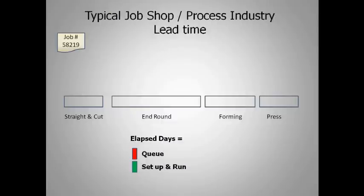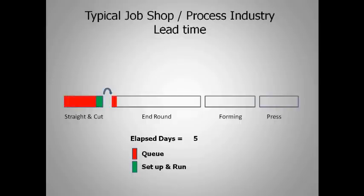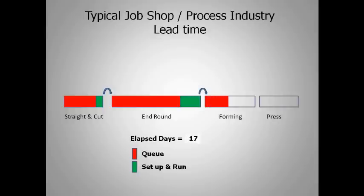In a job shop or process environment, we have a classic setup with work centers that do different things. In this example, we have straighten and cut, end rounding, forming, and press. A job gets entered into the system and starts its progression. In a typical job shop and process environment, most of the time it takes to get the job done is the job sitting at a work center waiting for all the other jobs that got there before it to be finished.